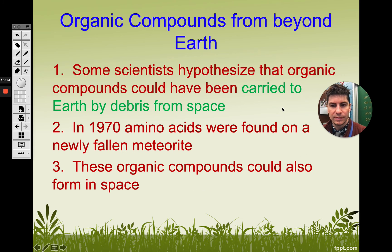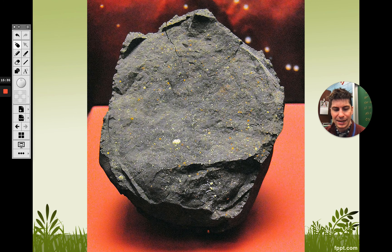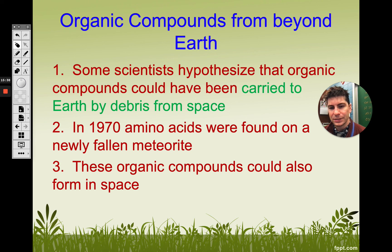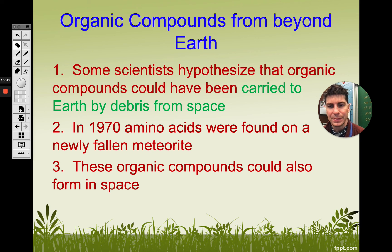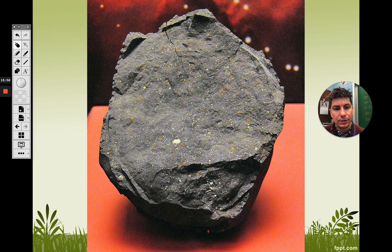Some of our amino acids are actually found beyond earth. In the 1970s, there was a meteorite that fell to earth — they studied the outside and inside of the meteorite and found amino acids on it. This is the actual meteorite they found, called the Murchison meteorite, and again, it had amino acids on it.